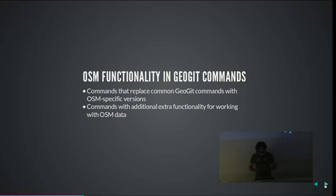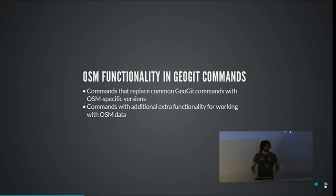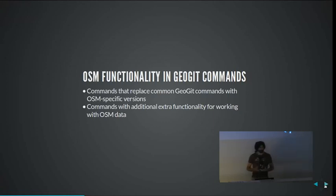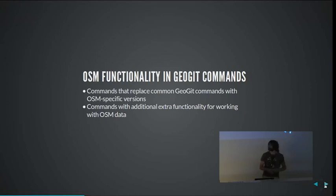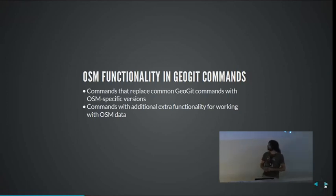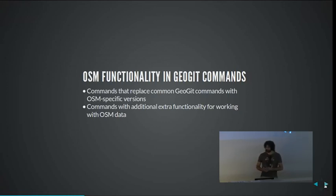So how does that apply to OpenStreetMap data? OpenStreetMap data in GeoGit is a very special type of data. While GeoGit is open to any data, in the case of OpenStreetMap we consider it an important source, so we have some specific features. Some of the commands that you normally use for GeoGit are adapted to OpenStreetMap data. For instance, we have import commands that work specifically with OpenStreetMap data and import data in OpenStreetMap format. The way that data is kept in the repo for OpenStreetMap is a fixed structure — it's always a fixed structure, so the GeoGit repository knows that the data comes from OpenStreetMap.